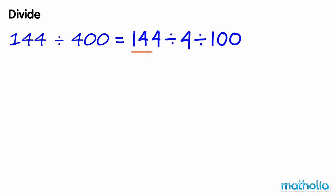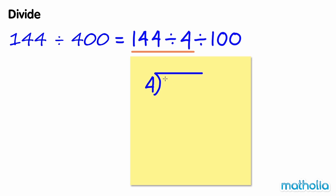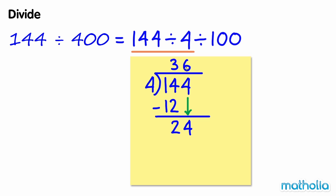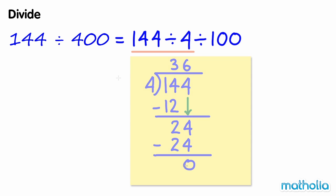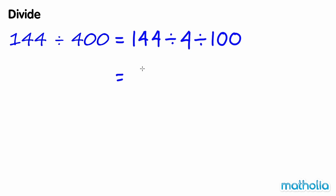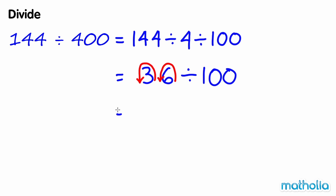First, let's find 144 divide 4. 144 divide 4 equals 36. Now we need to divide by 100. We can do this by shifting the decimal point 2 places to the left. 144 divide 400 equals 0.36.